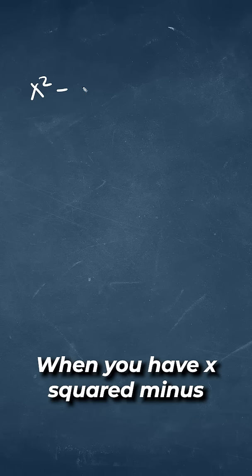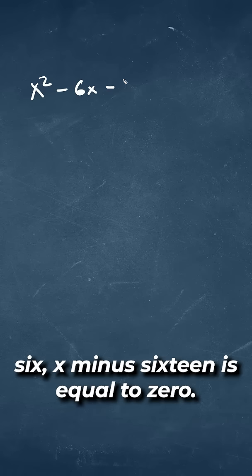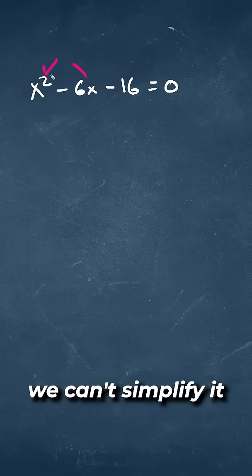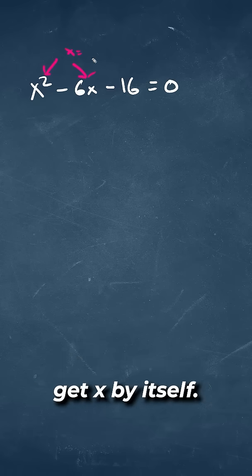How would you solve for x when you have x² - 6x - 16 = 0? With this x² and x, we can't simplify it in an easy way to get x by itself.